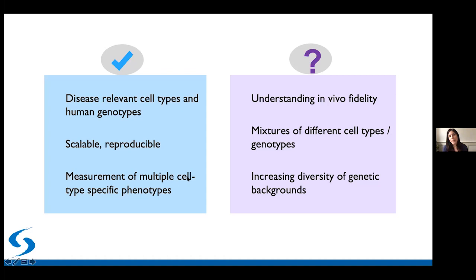Another important consideration is that a specific cell type does not exist in isolation in the human brain. When designing experiments, it will be better to mix different cell types to recapitulate a more physiological environment—for example, mixing excitatory neurons with inhibitory neurons, astrocytes, and microglia. That is really the dream, and we're hoping to get there slowly but surely.